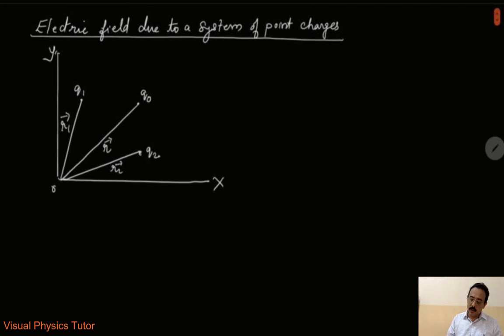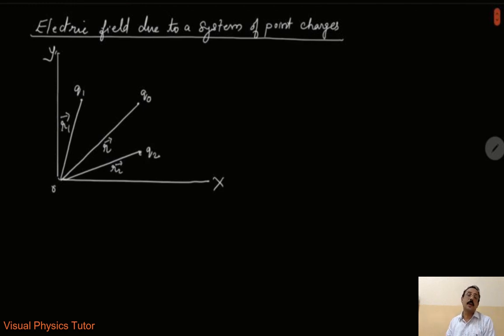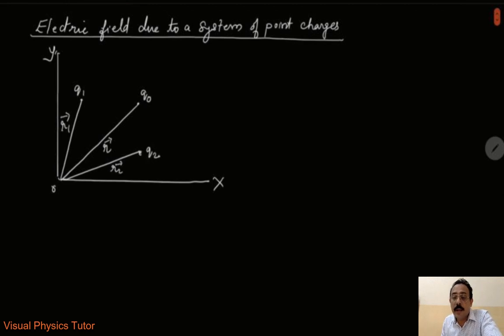So now let us recapitulate what was the formula we had learned for the electric field at a point due to a charge. It was E is equal to 1 by 4 pi epsilon naught, q by r square.